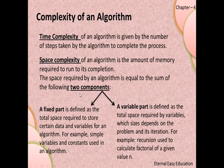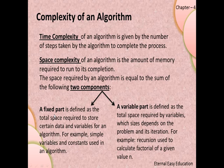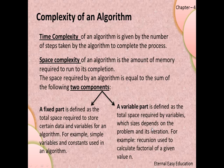Space complexity has two components: a fixed part and a variable part. The fixed part is the total space required to store certain data and variables — for example, simple variables and constants used in an algorithm — whose value remains constant throughout the program. The variable part is the total space required by variables whose size depends on the problem and its iterations — for example, recursions used to calculate the factorial of a number, where the storage space increases as the input n increases.